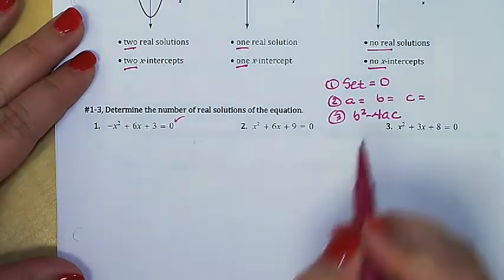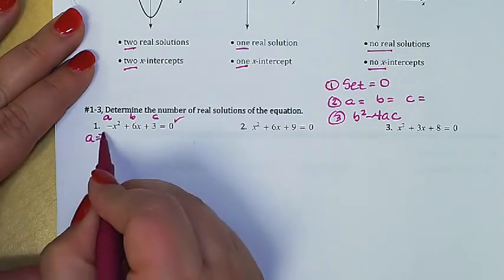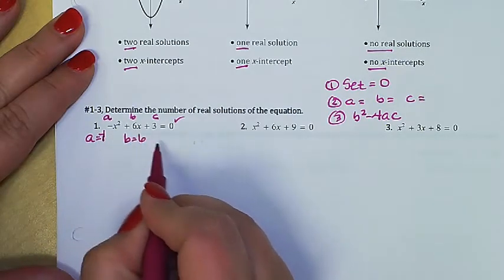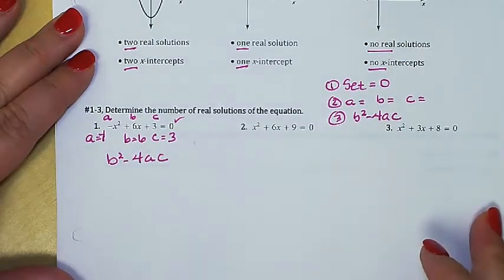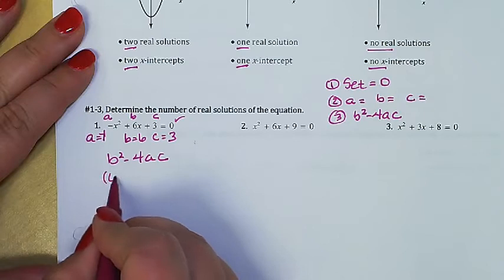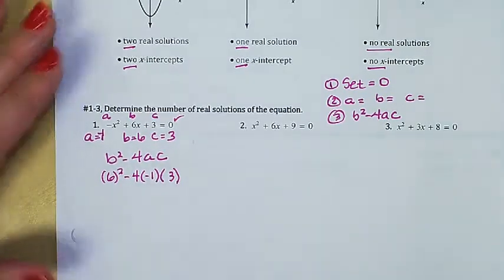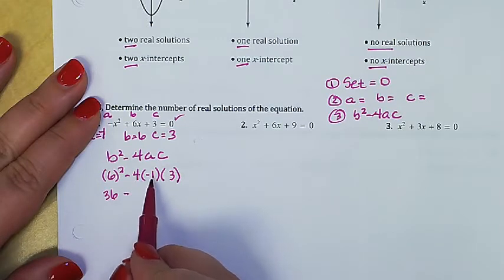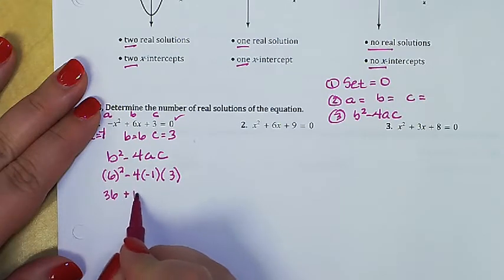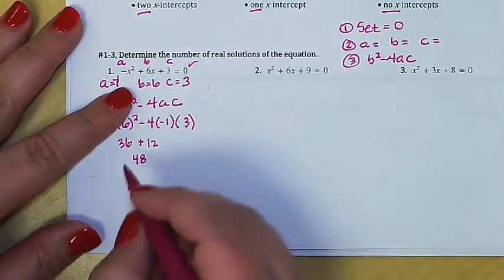Let's try example one. Make sure it's equal to zero — check. Now identify a, b, and c. Here, a is negative one, b is six, and c is three. Since we just want to know how many solutions it has, we plug into b²−4ac: that's six squared minus four times negative one times three. Six squared is 36, and four times negative one times three is negative twelve, so minus a negative twelve becomes plus twelve. That gives us 48, which is greater than zero.